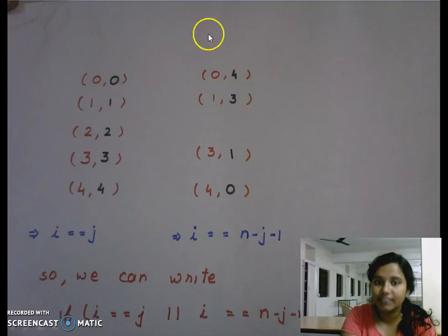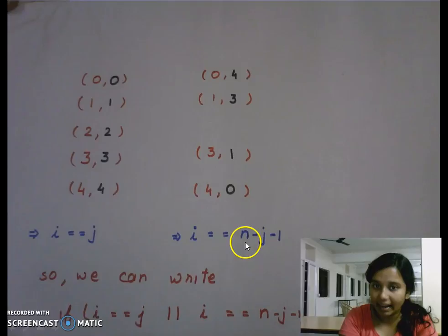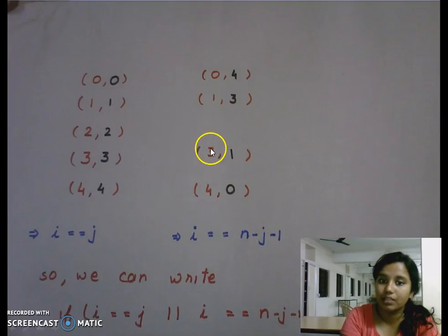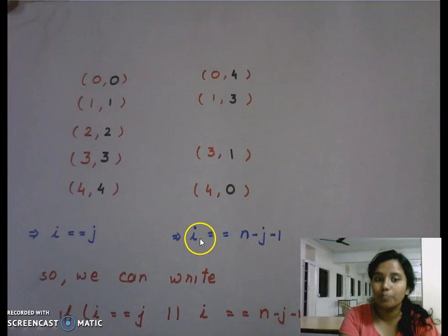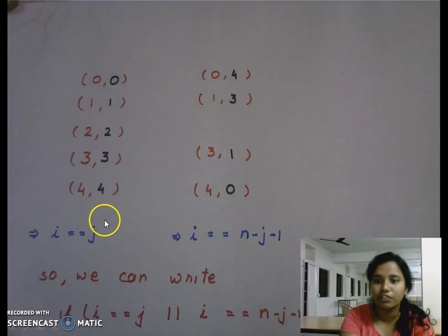And for these things, I can say if I want i, I take the user's input n minus the column minus 1 that again gives me i. If I subtract the user's input and the column minus 1, I get the row. So these two conditions, either one of them, any one of them should get satisfied so that I can print.